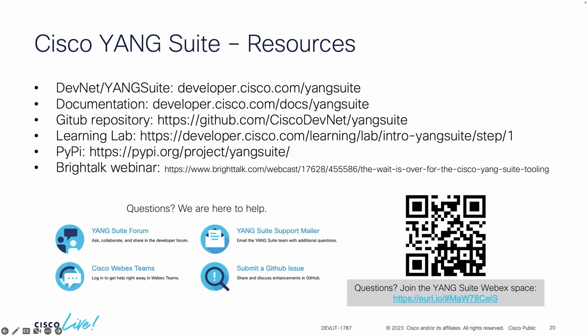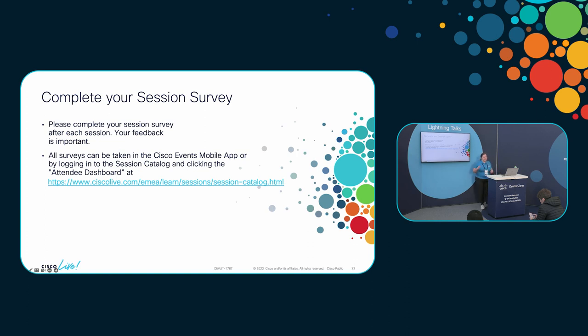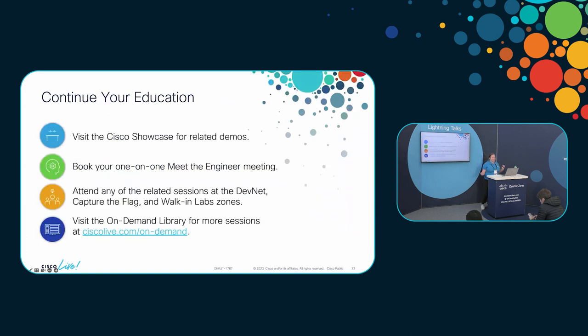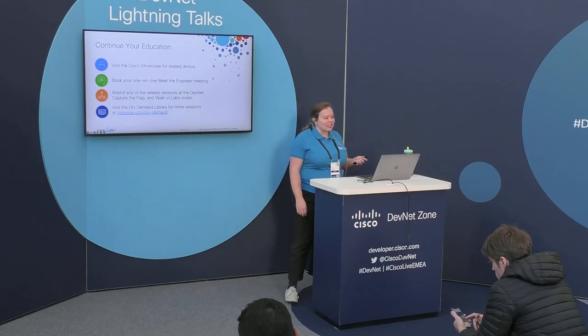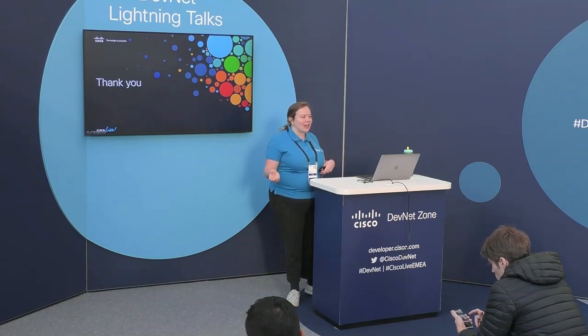Here are resources about how you can use Yang Suite. I'm also going to move on to some other sessions we have coming up this week. The QR code will lead you to a blog with all of our sessions happening at Cisco Live this week about programmability, automation, and telemetry. This blog also has links to all our on-demand sessions from previous Cisco Lives dating back to 2019. I encourage you to complete your session survey, and if you have any questions, please feel free to come up to me afterwards. Thank you for your time — I'm excited to see how you use Yang Suite in the future.